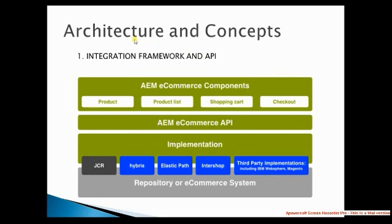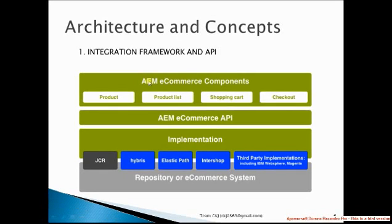The architecture has four key components: the commerce component, the commerce API implementation, and the repository commerce component. The commerce component already provides products, product list, shopping cart, checkout, and confirmation. The e-commerce API is a very important part, and last is the repository.